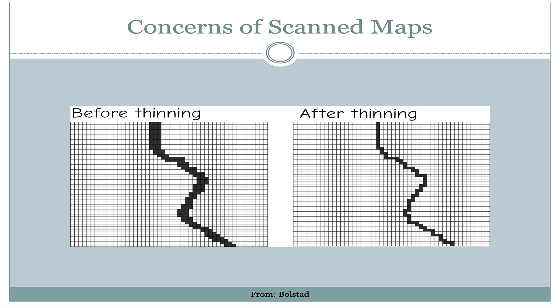In the example on the left, we can see that sometimes the line can be as many as three pixels, or in some cases, depending on what direction the line is going, sometimes even wider than three pixels. In the end, we might want to convert this to a vector line, and it would not be great to have such a wide area to choose from as far as where that vector line is going to be located.